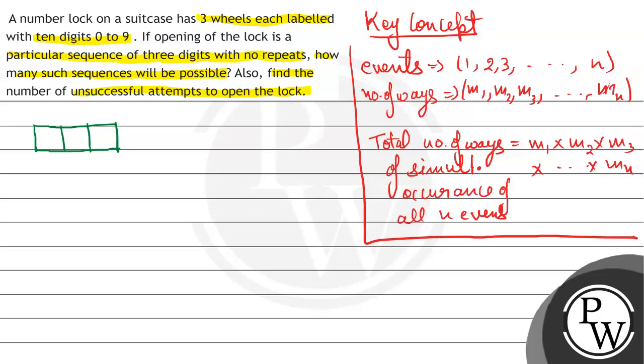It means अगर हम find करें, तो 1st place पे 0 to 9 में से कोई भी number हम अगर डालें, तो यहाँ पे 1st place पे number put करने के 10 ways हैं, 2nd place पे 9 ways हैं and 3rd place पे 8 ways हैं.